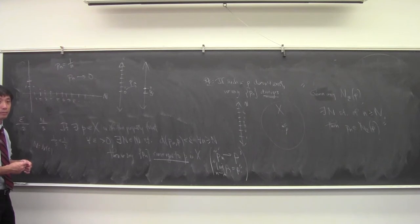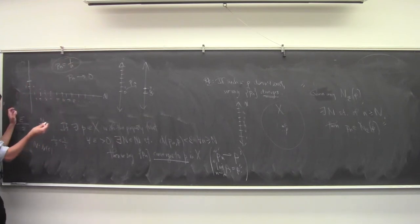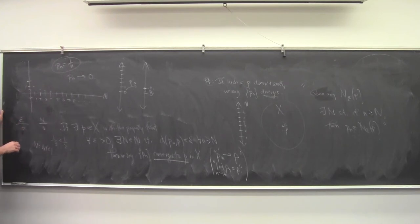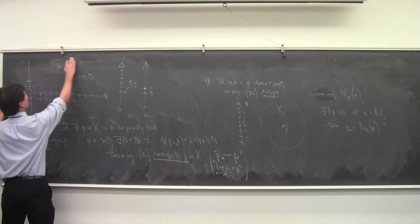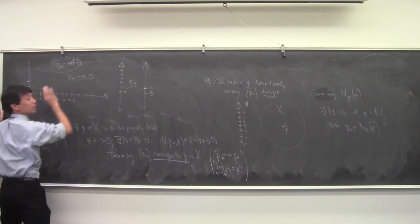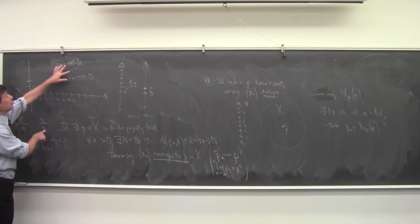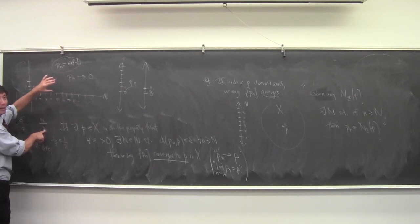In answer to whether the neighborhood could go below zero: consider the sequence (−1)^n / n. These guys bounce back and forth, but the distance to zero is still just 1/n. If I give you ε = 1/2, N = 3 still works. If ε = 1/billion, N = billion+1 still works.